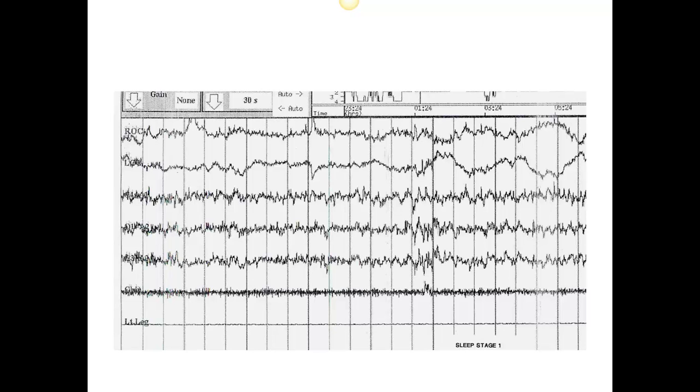Generally what we look for in stage one is a slowing of the background frequency, and the cycles per second drops to maybe 4 to 7 hertz or cycles per second, and the presence of those slow rolling eye movements.